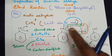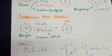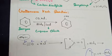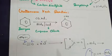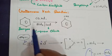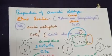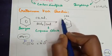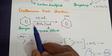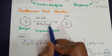Moving on to the second name reaction: the Gattermann-Koch reaction. In this reaction, benzene is converted into benzaldehyde, since we are talking about the preparation of aromatic aldehydes. This reaction takes place in the presence of carbon monoxide, HCl, aluminium trichloride (AlCl3), or cuprous chloride (CuCl).